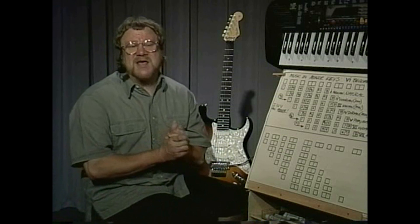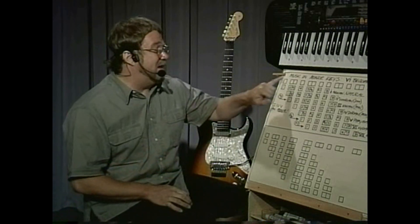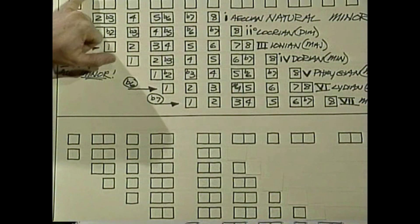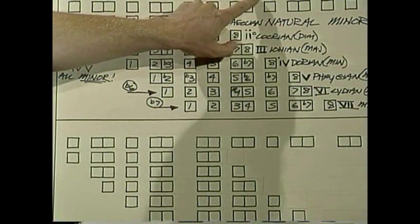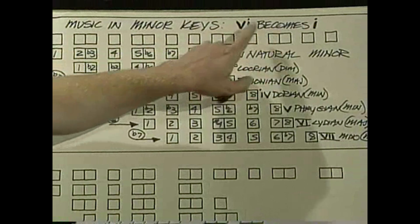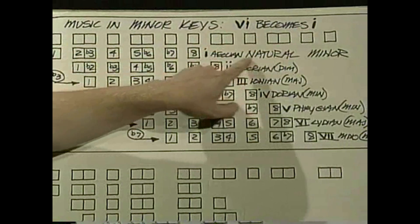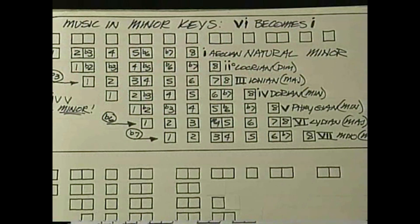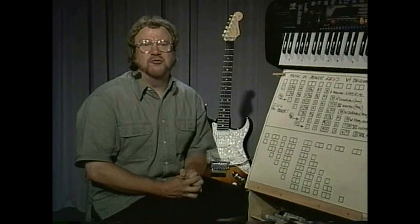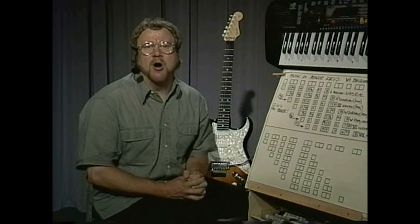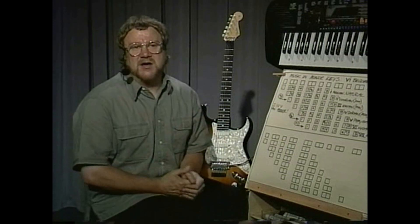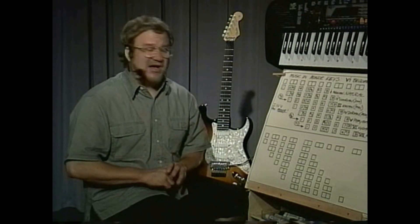There is more to playing in minor keys than that, but that's basically the gist of it. Remember, the concept of playing in minor keys can be summed up in pretty much three words: six becomes one. The natural minor — the Aeolian mode — becomes the scale that everything works off of. That gives you a chord progression where one, four, five are now all minor chords, and you use the corresponding modes to create your melodies as well.